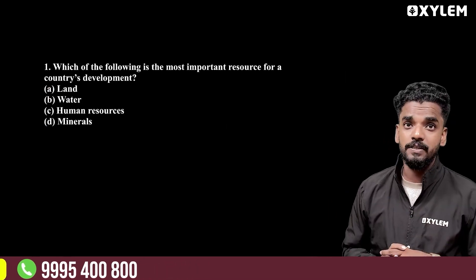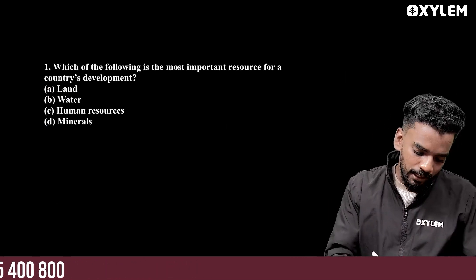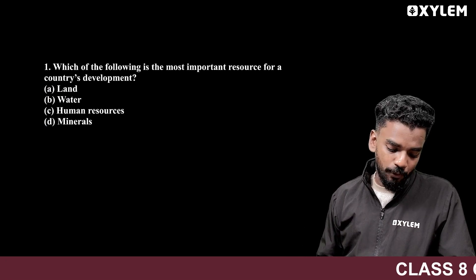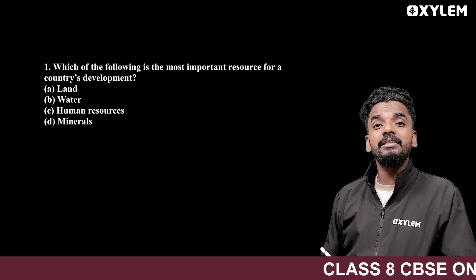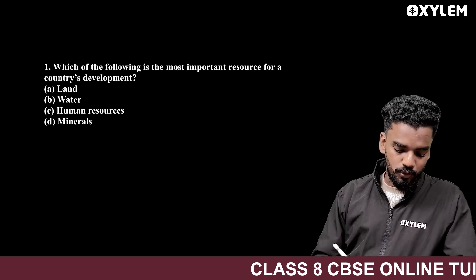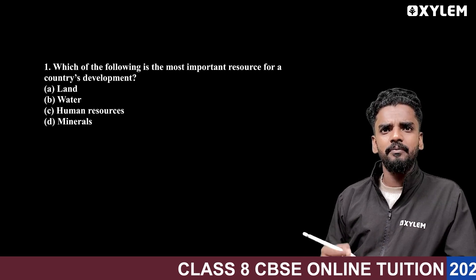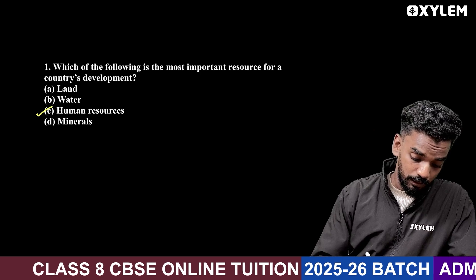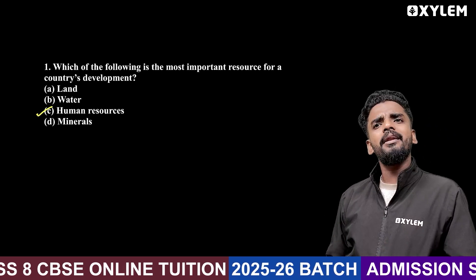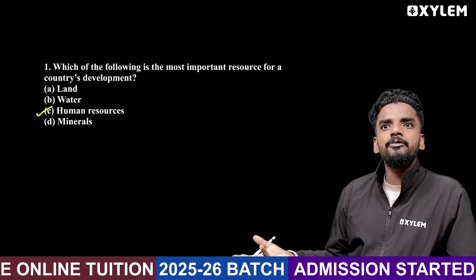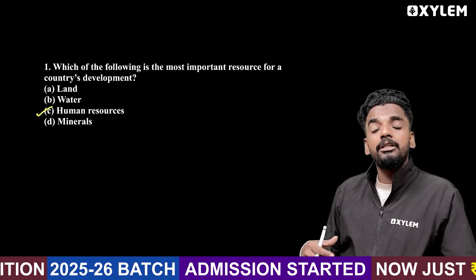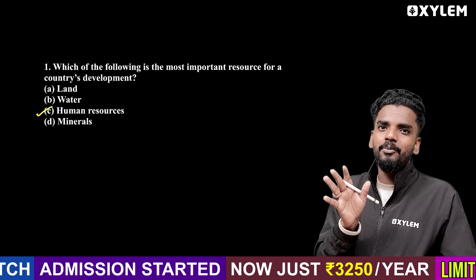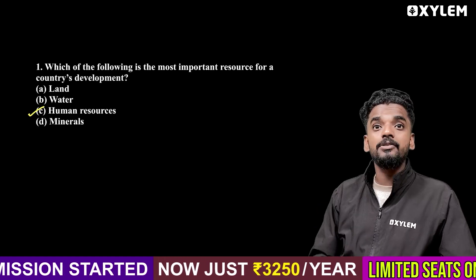Now questions on human resources. The first question: which of the following is the most important resource for a country's development? Land and water are resources, but human resources are the most important. Human resources can be created in a country — that is the key answer.